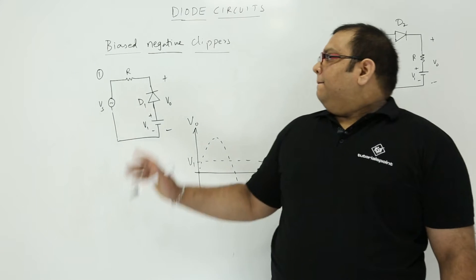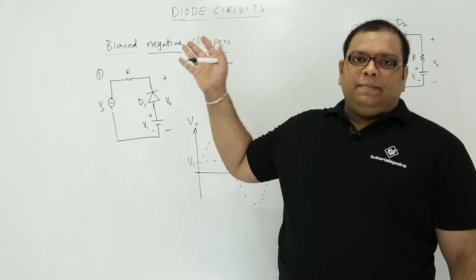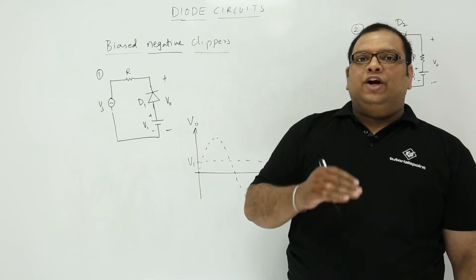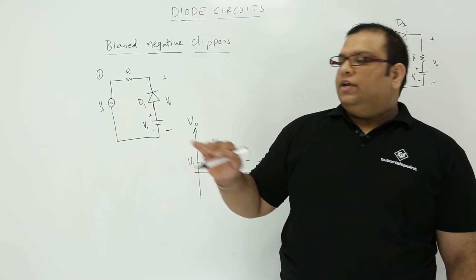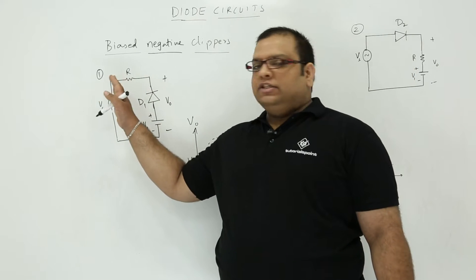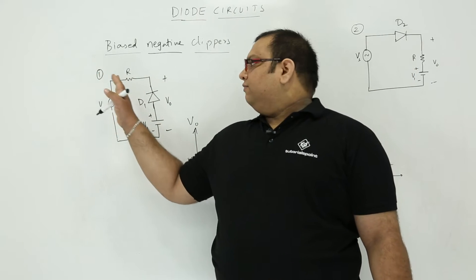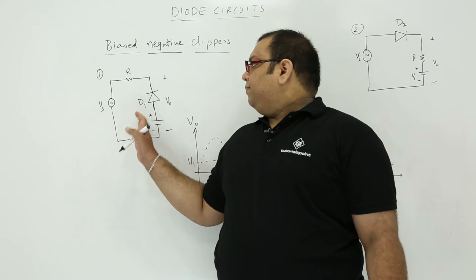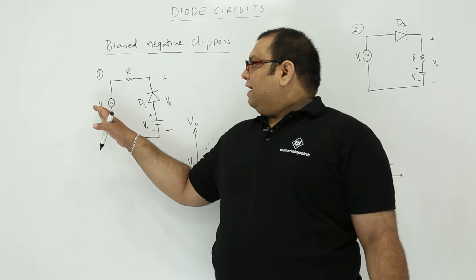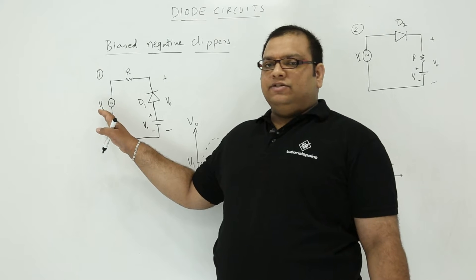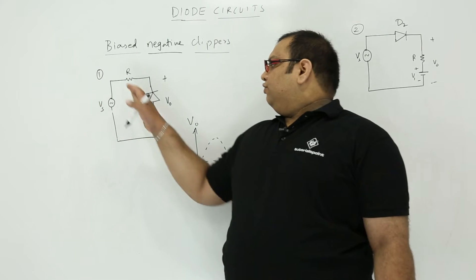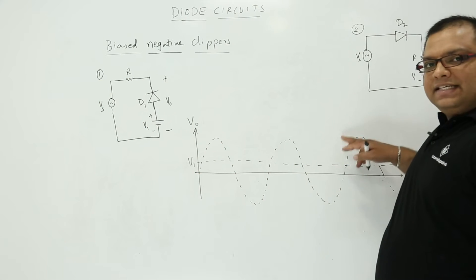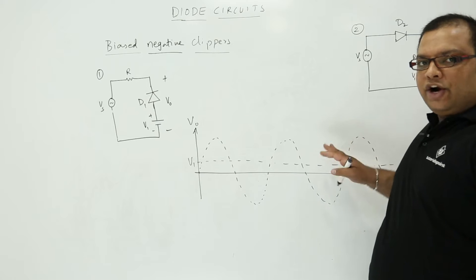Now let us discuss biased negative clippers. In biased negative clippers, we will clip the negative peak. Here I will explain with two circuits. Starting with the first one: diode D1 is connected from a voltage source, and we are having a supply voltage that is a signal source. From the signal source, I am taking a sinusoidal signal which is represented in a dotted line.